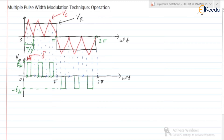If Vc becomes greater than Vr — only during this interval — the comparator gives the output as logic high, and due to that the trigger pulse generator circuit provides the triggering pulses to the respective SCR. So here we are turning on S1 and S2, then they are turned off; again S1 and S2 are turned on, then turned off; then S1 and S2 are turned on and turned off again.